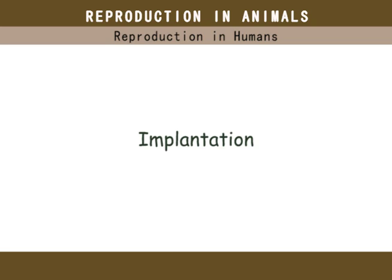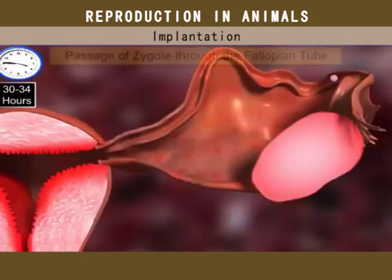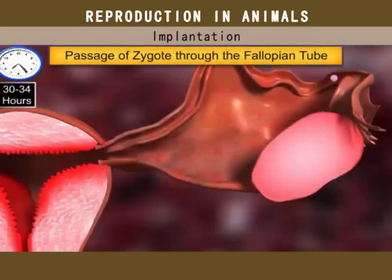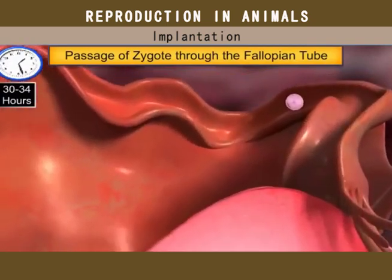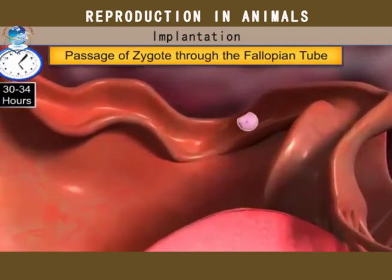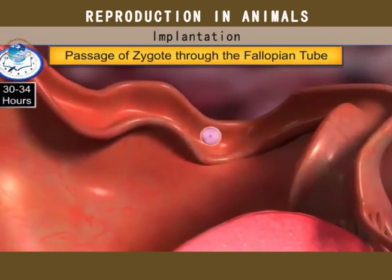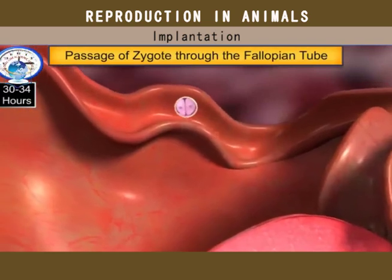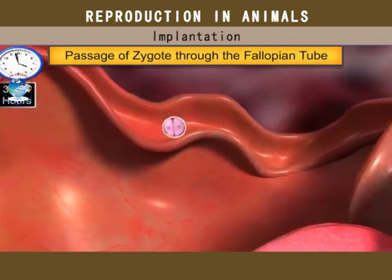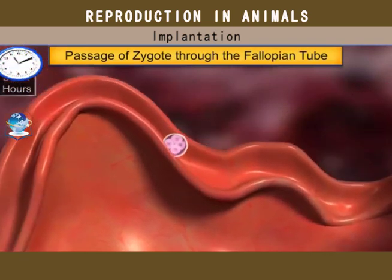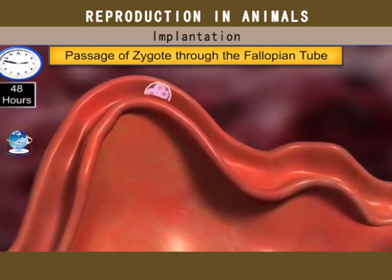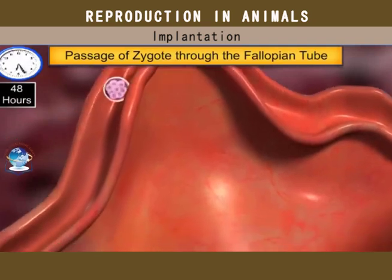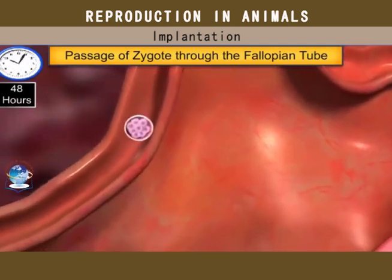A little more than a day after fertilization, the zygote starts moving down the fallopian tube. Simultaneously, it undergoes mitotic divisions with the number of daughter cells doubling with each division.